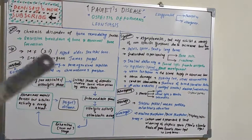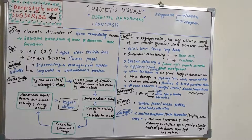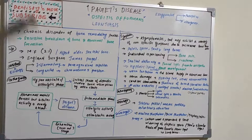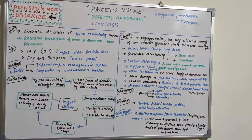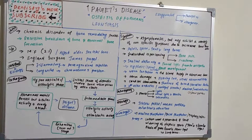Eventually, osteoblastic activity overtakes osteoclastic activity, resulting in more but weaker bone formation. Over time, osteoblastic activity also slows down and a dormant state is reached. The bone in this dormant state is known as burned-out bone or the burnout state. In this state, the abnormal matrix persists but cellular activity is nearly absent.